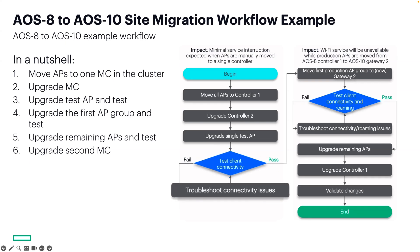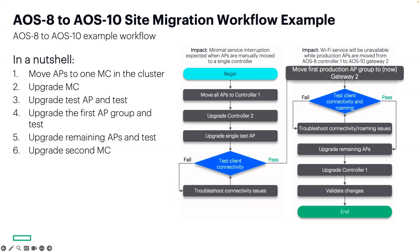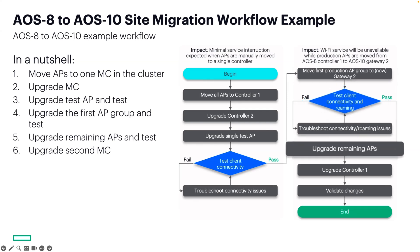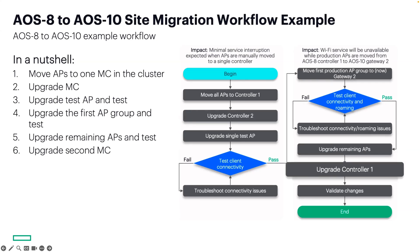Once client testing is complete, move your first group of APs to what is now gateway 2, whether it's by AP group, by floor, or by campus building. Repeat your testing along with roaming. Once this passes, repeat the last step until all APs are on AOS 10. Finally, upgrade the second controller, validate all changes, and monitor.